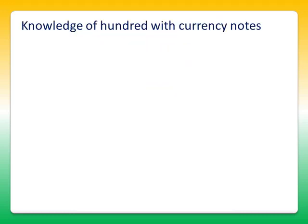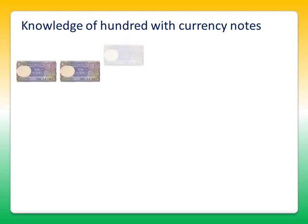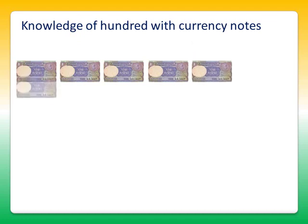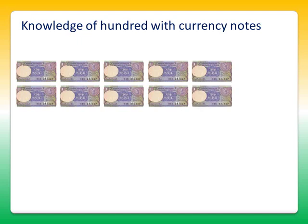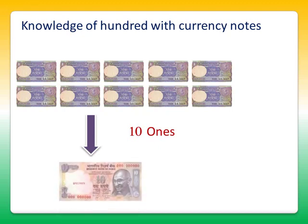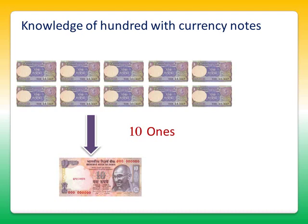For that, consider the 1 rupee notes. It is 1, 2, 3, 4, 5, 6, 7, 8, 9, 10. So 10 notes means 10 ones. So 10 one-rupee notes are equal to 1 ten-rupee note, which we call 1 ten. So 10 ones is equal to 1 ten.